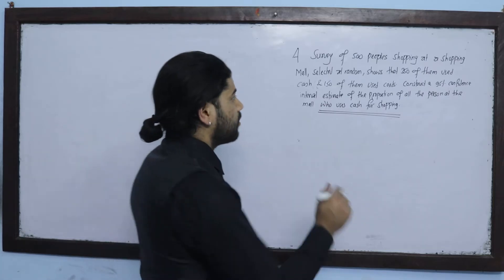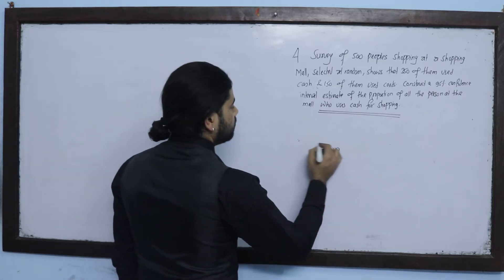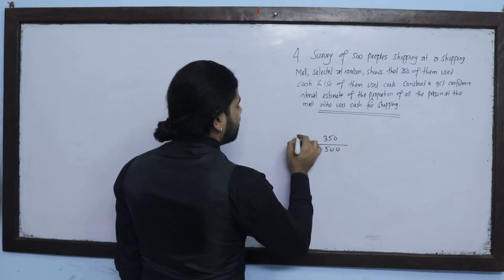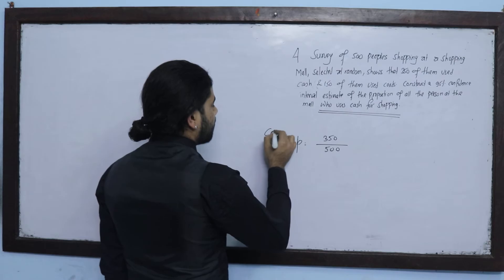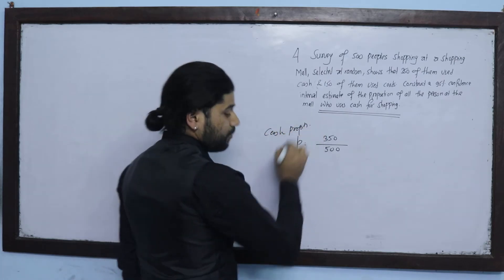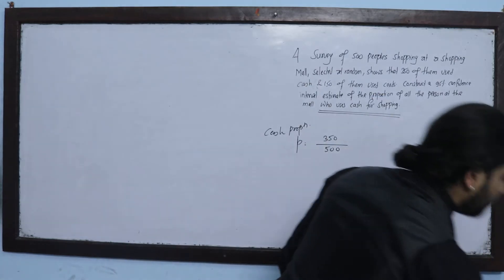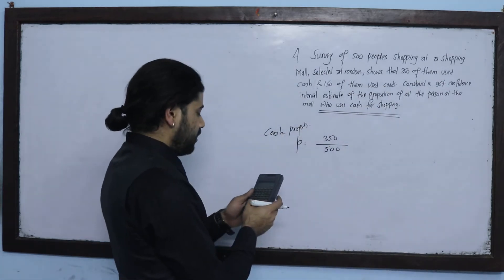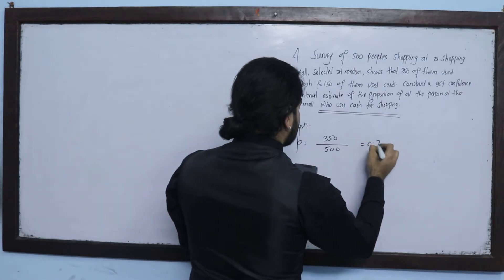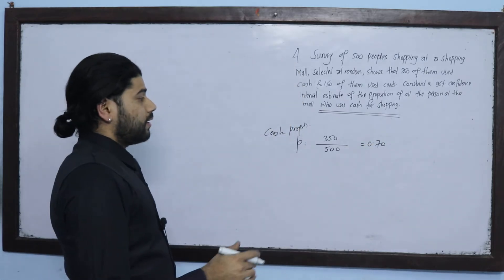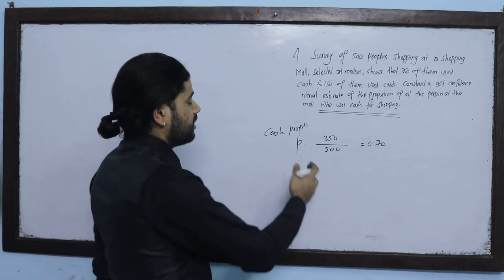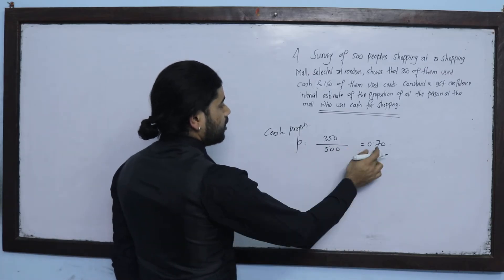What is the sample size? The total number of people surveyed is 500. The sample proportion: 350 divided by 500 equals 0.70. So p̂ = 0.70.